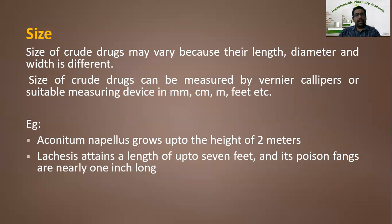For example, Aconitum napellus is a very common homeopathic drug — it is a plant which grows up to a height of two meters. Coming to an animal drug, the snake Lachesis attains a length up to seven feet and its poison fangs are nearly one inch long. This is one identification feature of the poisonous snake Lachesis, from which we take the poison to prepare the medicine.